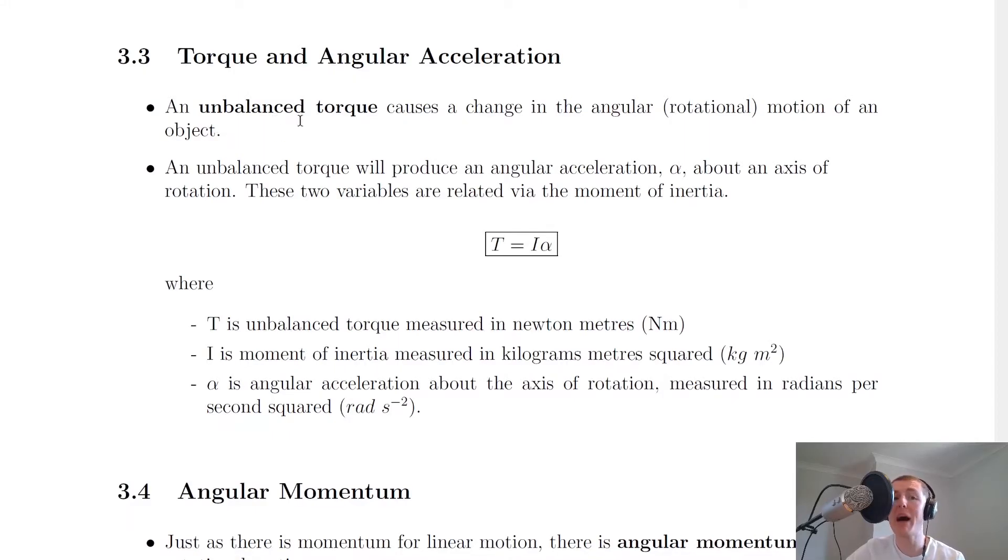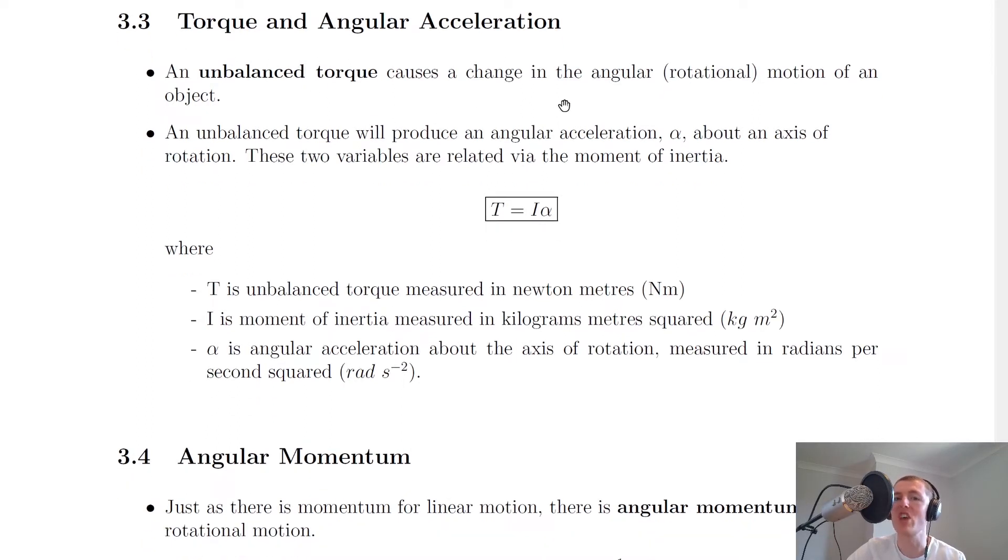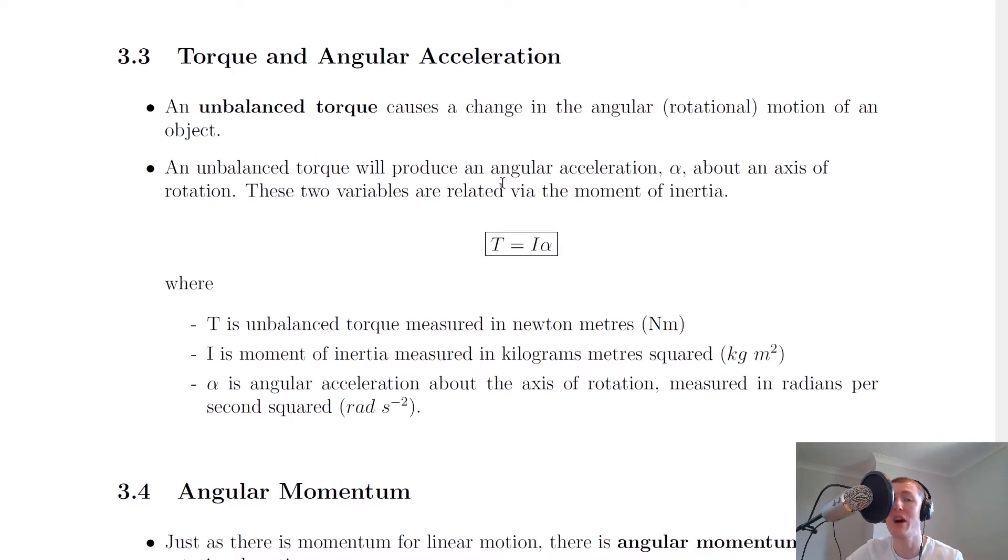The first thing it says here is that an unbalanced torque causes a change in the angular rotational motion of an object. That's similar to the idea of an unbalanced force causing a change in the linear motion of an object, which you've seen since about third year physics or national five physics.